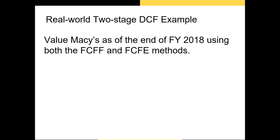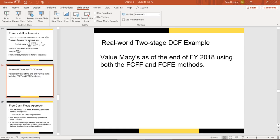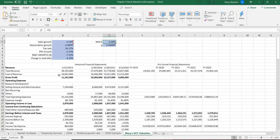Now let's take a look at an actual two-stage discounted cash flows valuation in the real world. We'll look at Macy's as of the end of fiscal year 2018, valuing the firm using both the FCFF and FCFE methods. I've already collected historical balance sheet and income statement data in Excel, so let's walk through it. Here is our two-stage discounted cash flows valuation — let's start with the historical financial statements.